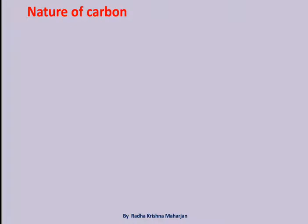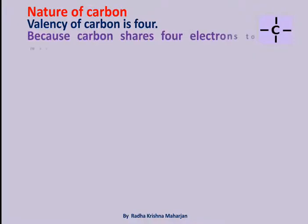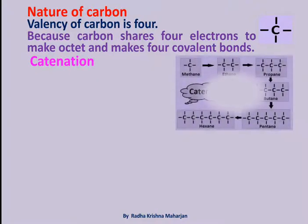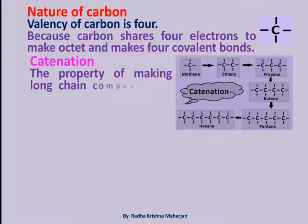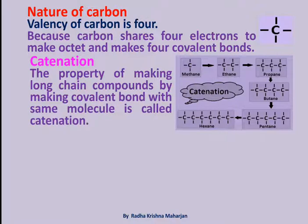Nature of Carbon: The valency of carbon is 4, because carbon shares 4 electrons to make an octet and makes 4 covalent bonds. Catenation: The property of making long chain compounds by making covalent bonds with the same molecule is called catenation.